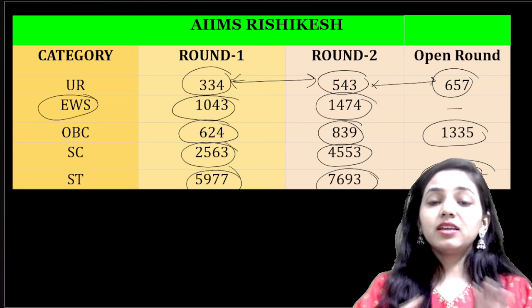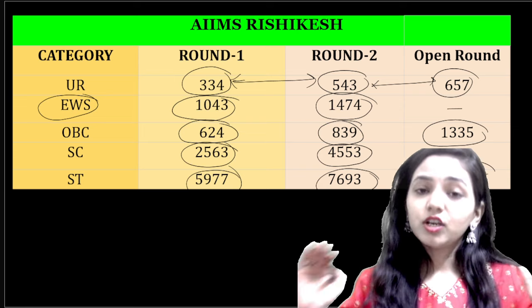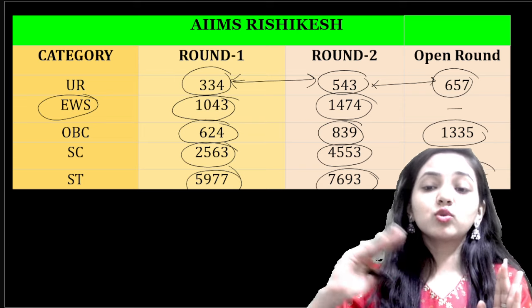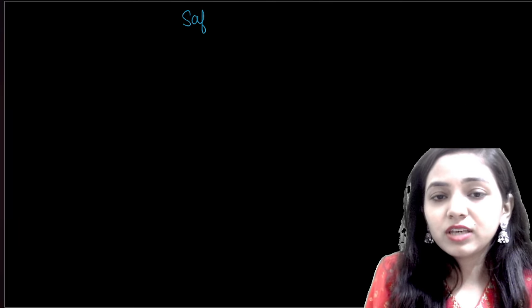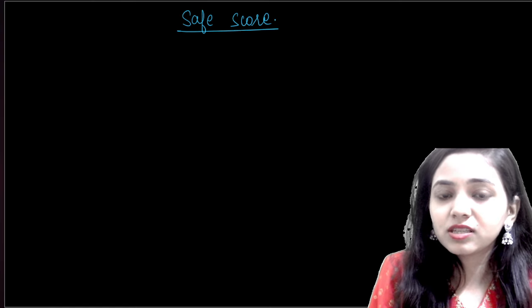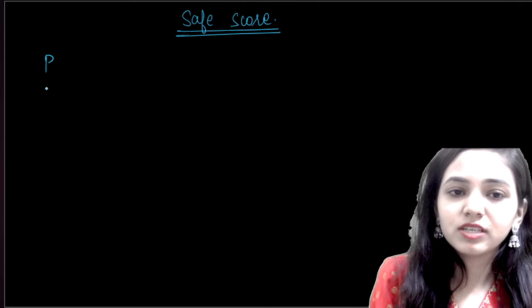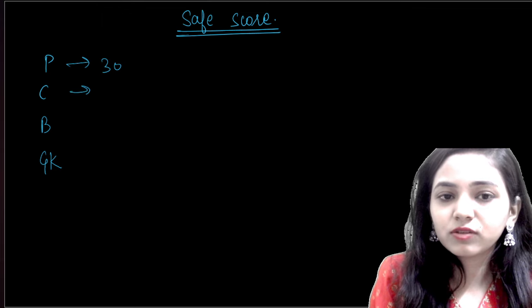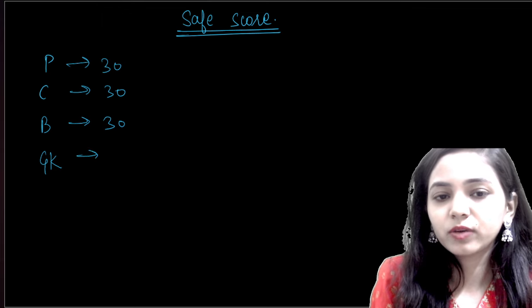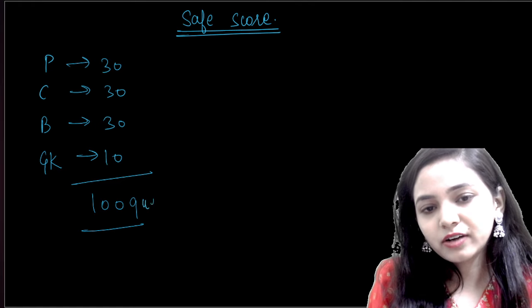These are low ranks, but on the basis of rank we need to know how much expected score is required. I'm going to tell you a safe score here. You have to pay attention. If you are preparing for AIIMS nursing, you know about the syllabus: Physics, Chemistry, Bio, and GK - there are 4 subjects. There are 30 questions in Physics, 30 in Chemistry, 30 in Bio, and 10 questions in GK. Total 100 questions carrying 100 marks.